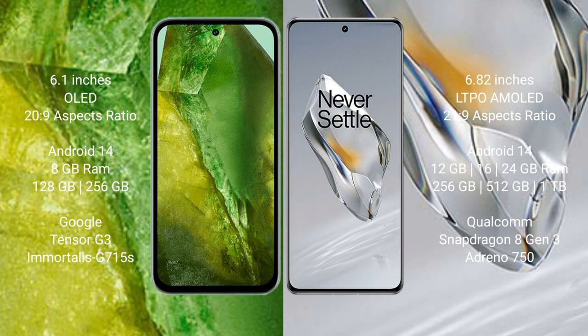The Google Pixel 8a comes with 8GB RAM and 128GB or 256GB internal storage, powered by the Google Tensor G3 processor with an Adreno 740 GPU. The OnePlus 12 comes with 12GB